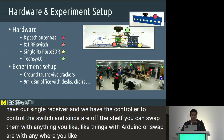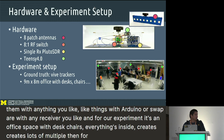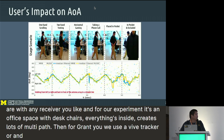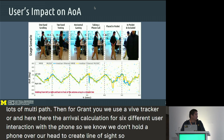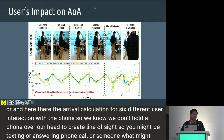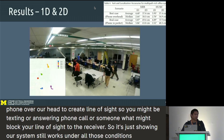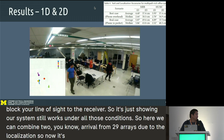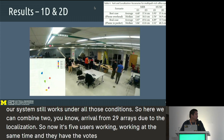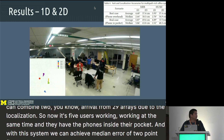Our experiment is in an office space with desks, chairs, and everything inside, creating lots of multipath. For ground truth, we use a Vive tracker. We tested angle of arrival calculation for six different user interactions with the phone — texting, answering a call, or having someone block the direct line of sight to the receiver — and our system still works under all those conditions. We also combine two angle of arrival measurements from two antenna arrays to do 2D localization with five users walking simultaneously with phones in their pockets, achieving a median angle error of 2.52 degrees and a median localization error of 48.5 centimeters.